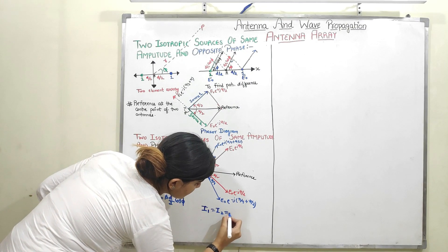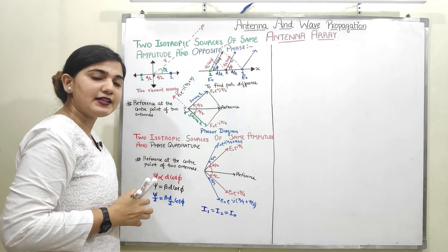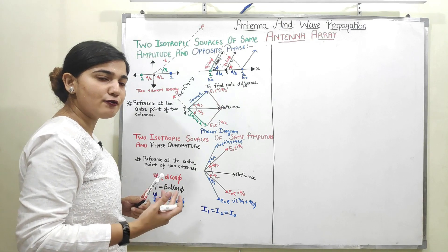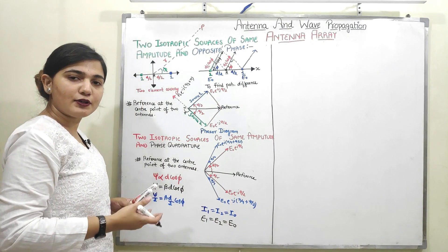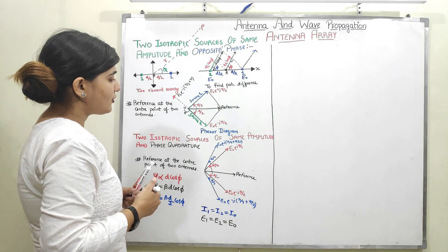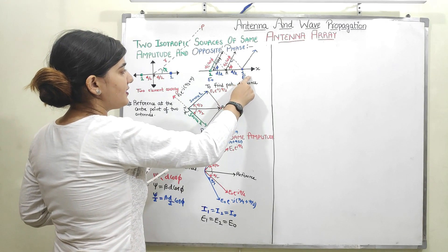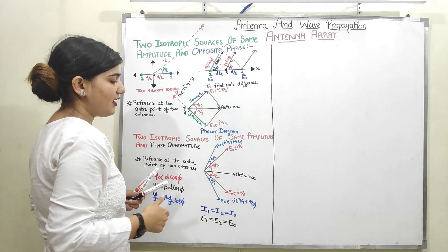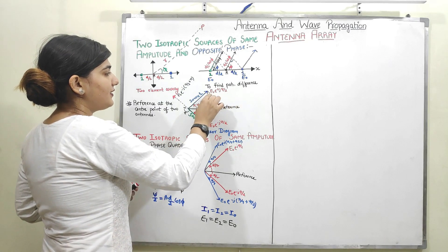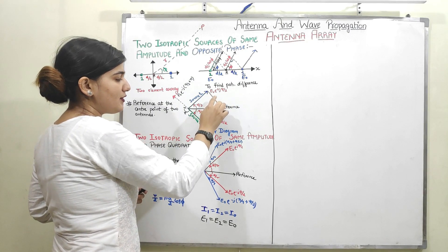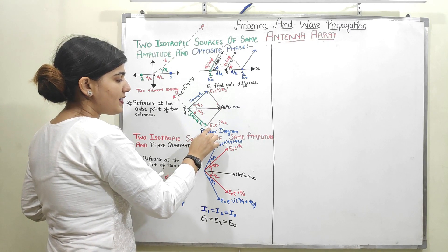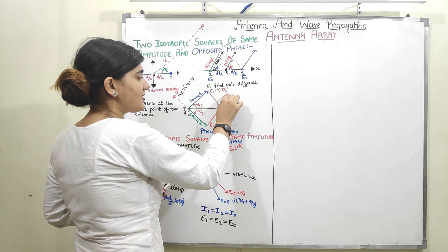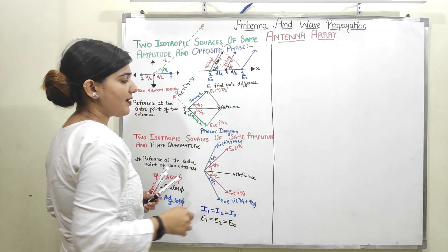I₁ = I₂ = I₀. Since both antennas are similar, by Ohm's law E₁ = E₂ = E₀. Antenna 1 has electric field E₀ and antenna 2 also has electric field E₀. The phasor angle for source 1 is represented by E₀·e^(+jψ/2) and for source 2 as E₀·e^(−jψ/2).